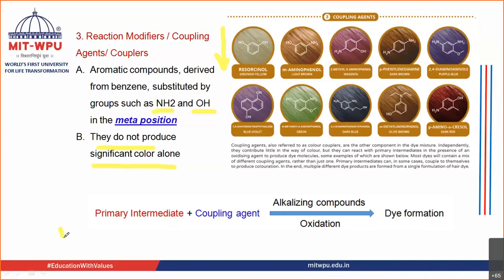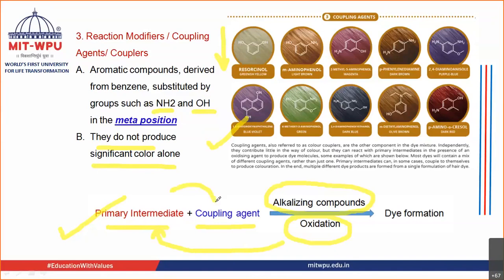Once again, to summarize the reaction: you have primary intermediates, you have coupling agents, you have alkalizing compound in the form of ammonia or ammonia-free alternatives, and you have oxidizing agents in the form of H2O2. H2O2 reacts with your primary intermediates to form an intermediate, which further reacts with your coupling agent, and finally there is a formation of a dye.